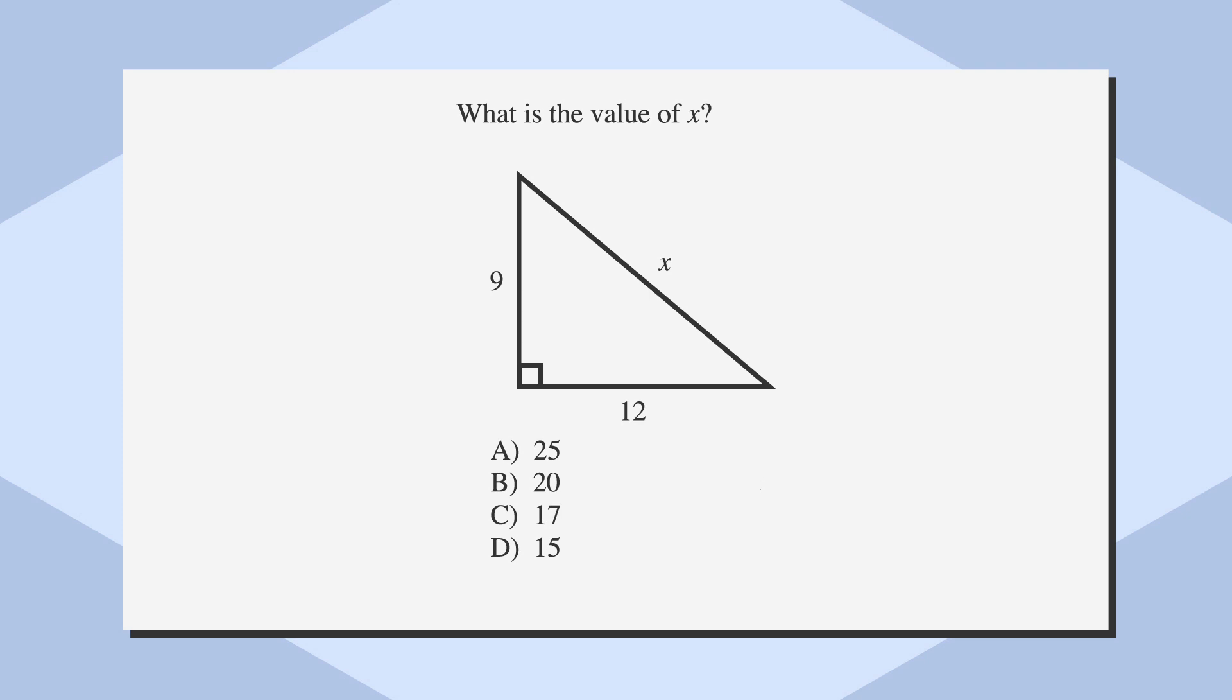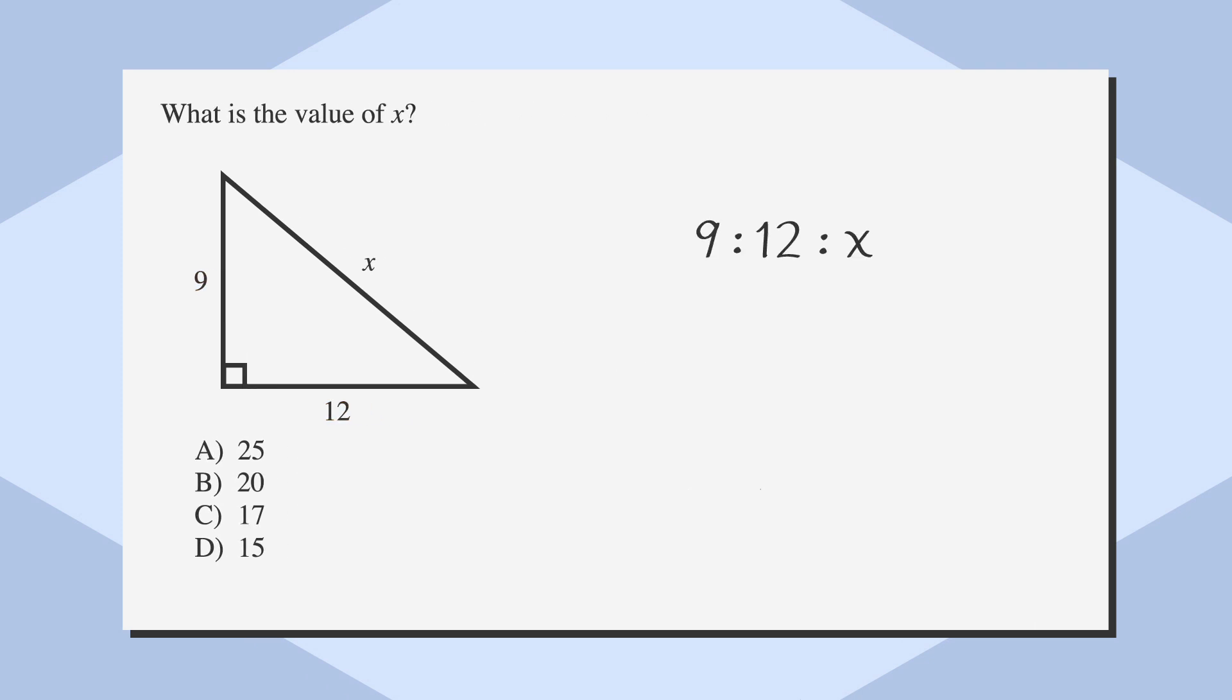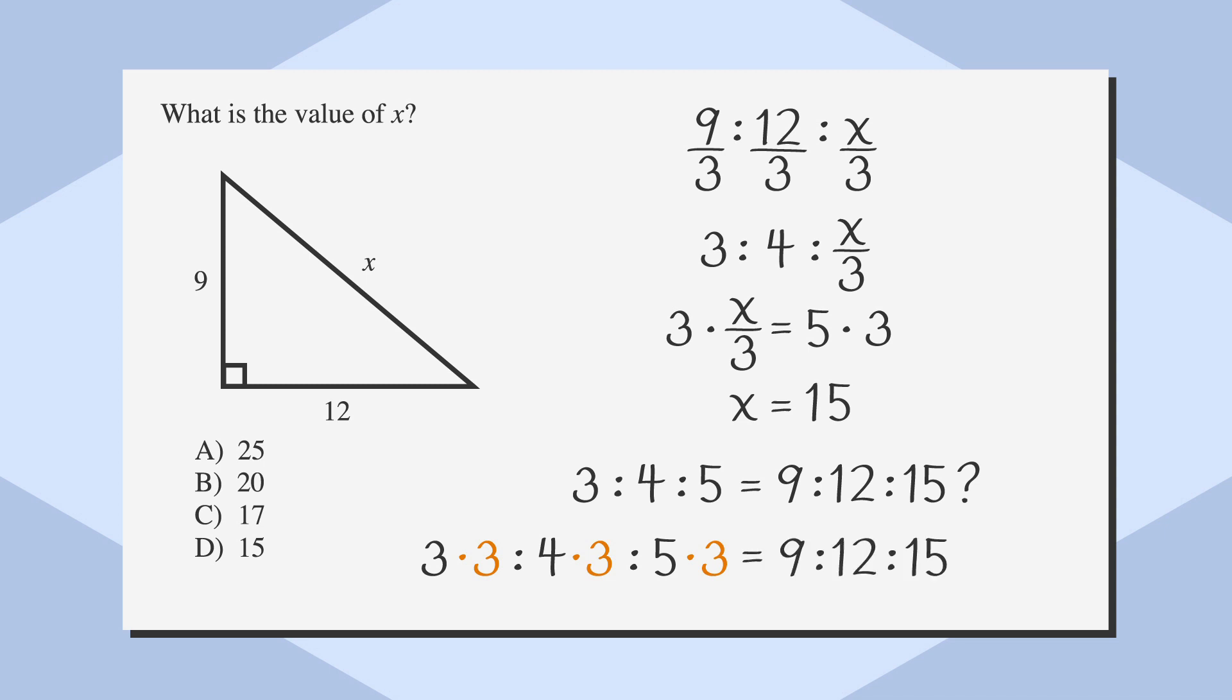Let's take a look at the sides that we do know: 9 and 12. We can say that those sides are in a ratio of 9:12:x. If we simplify that ratio by dividing by 3, we get that our sides are in a ratio of 3:4:x/3. Since we know now that any right triangle with legs of 3 and 4 has a hypotenuse of 5, we can set x/3 = 5. If we solve for x by multiplying both sides by 3, we get x = 15. Let's check our math. Is the ratio of 3:4:5 the same as the ratio of 9:12:15? Well, if we multiply the first ratio by 3, it equals the second.